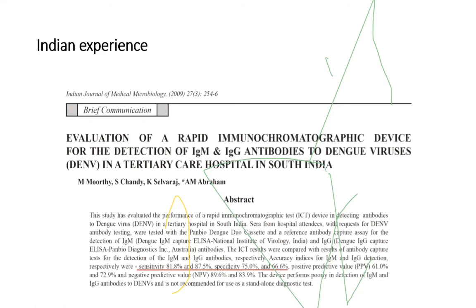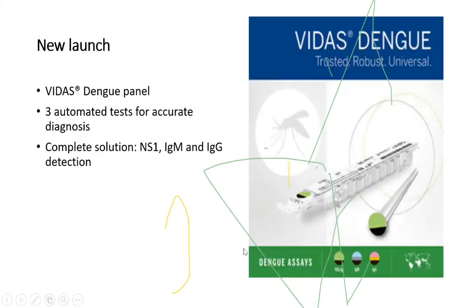Dengue rapid kits are available but must be confirmed by ELISA. The kits have very good sensitivity although specificity is low. Recently, automated tests for accurate diagnosis of dengue including NS1, IgM, and IgG have been launched.